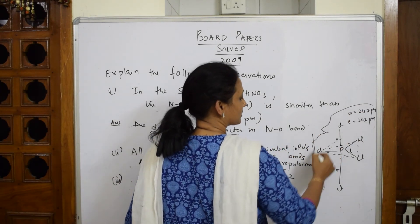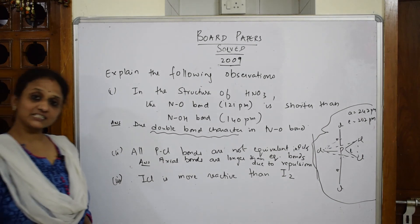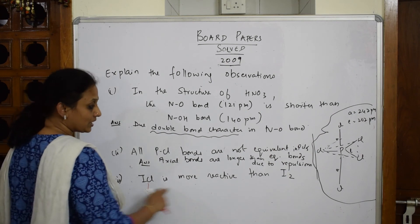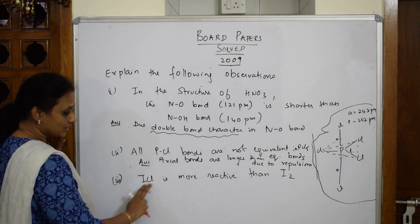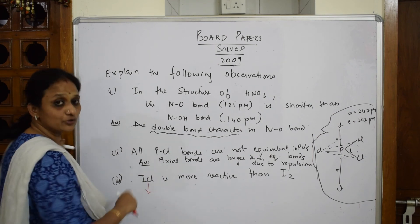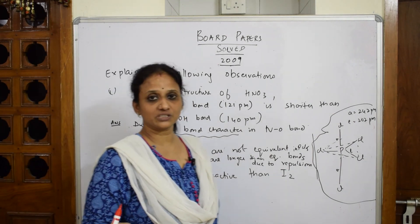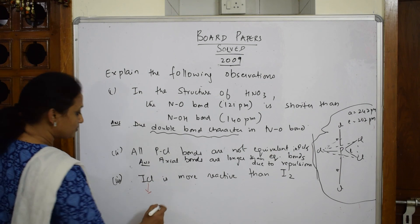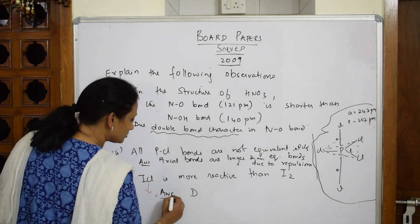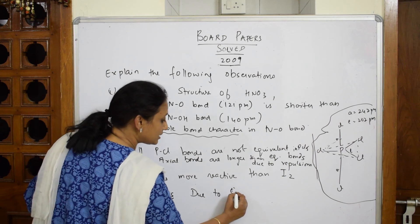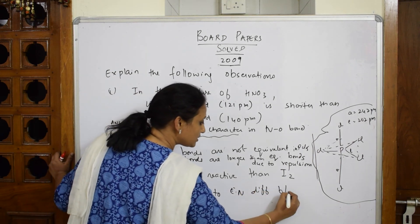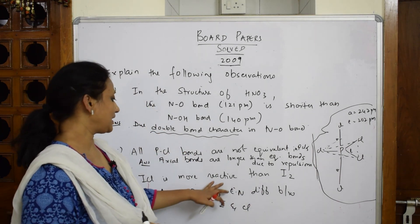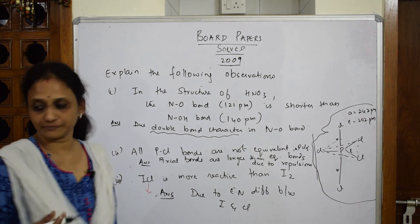Next question: ICl is more reactive than I₂. ICl is an interhalogen compound — a combination of two halogens. It is more reactive than iodine (I₂). Why? Because in I₂ there is no electronegativity difference — two similar atoms. But in ICl, the answer is: due to the electronegativity difference between iodine and chlorine. Because of that difference there is a pull on the electron pair, and it automatically becomes more reactive.